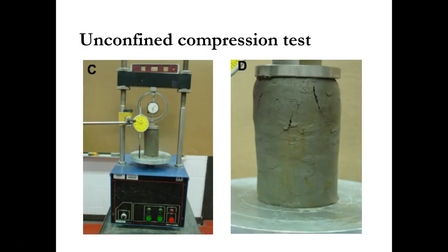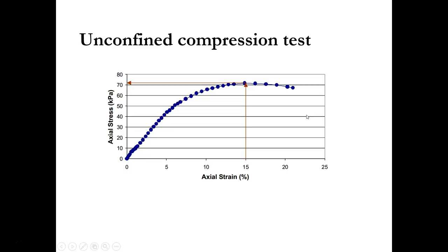We then apply the axial load and record the load at different strains until the soil sample fails. We draw the axial stress versus axial strain curve and determine the maximum axial stress at which the soil sample fails, or the stress corresponding to 15% strain. In some cases the peak stress and the stress at 15% strain coincide, but most of the time they do not.